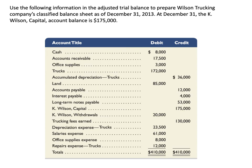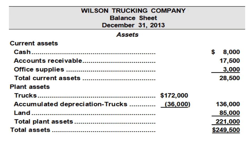Hopefully you've had a chance to complete the classified balance sheet. Here is the asset section. I have classified the current assets separately from the long-term or plant assets. In the current assets section we have cash, accounts receivable, and office supplies, which all sum to $28,500. In the long-term assets section, trucks are listed at their cost, minus accumulated depreciation, giving a book value of $136,000. Land, which is not a depreciable asset, is on the books at cost at $85,000. Total long-term or plant assets total $221,000, plus current assets of $28,500, gives total assets of $249,500.